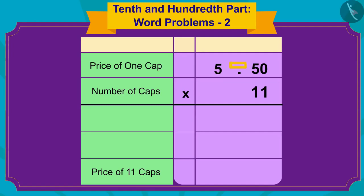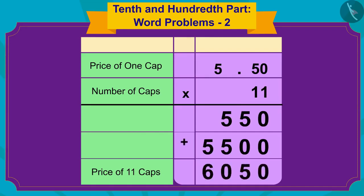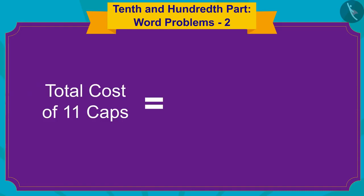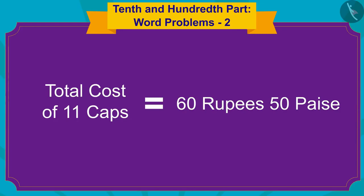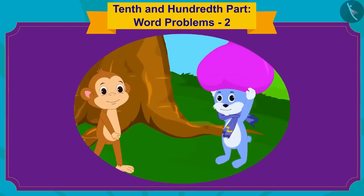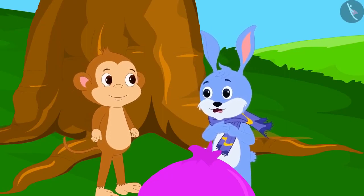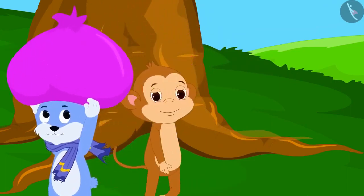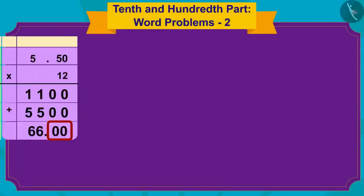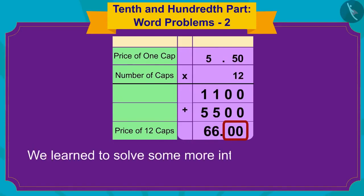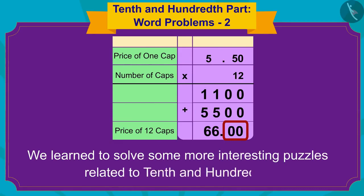We multiply 5.50 by 11. Because there are two digits after the decimal point in 5.50, we write the decimal point in the answer so that there are two digits after it. The total cost of 11 caps would be 60 rupees and 50 paise. Bunny thanked Babban for helping him and headed towards the city.